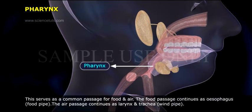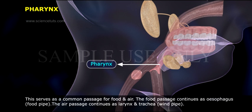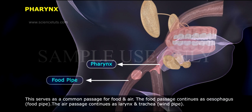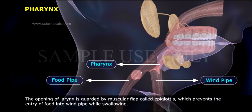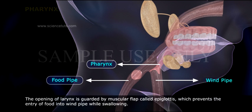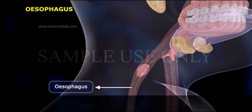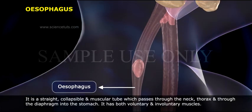The pharynx serves as a common passage for food and air. The food passage continues as the esophagus, or food pipe. The air passage continues as the larynx and trachea, or windpipe. The opening of the larynx is guarded by a muscular flap called the epiglottis, which prevents the entry of food into the windpipe while swallowing.